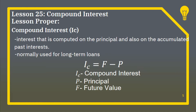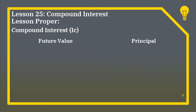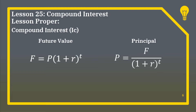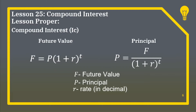The formula is: Ic is equal to F minus P, where Ic is the compound interest, P is the principal, and F is the future value. For future value, F is equal to P multiplied by the quantity 1 plus R raised to T. For the principal, P is equal to F over the quantity 1 plus R raised to T. Here, F is the future value, P is the principal, R is the rate in decimal, and T is the time in years.